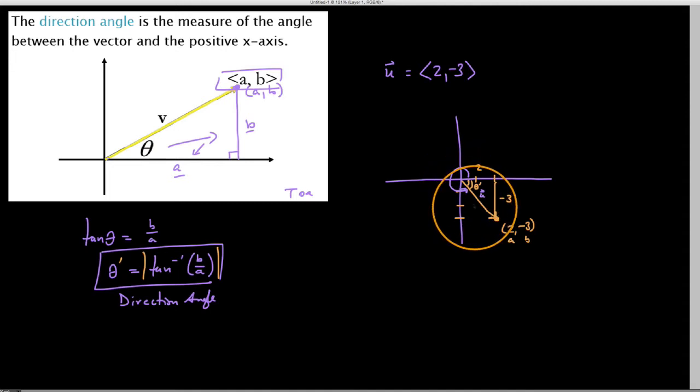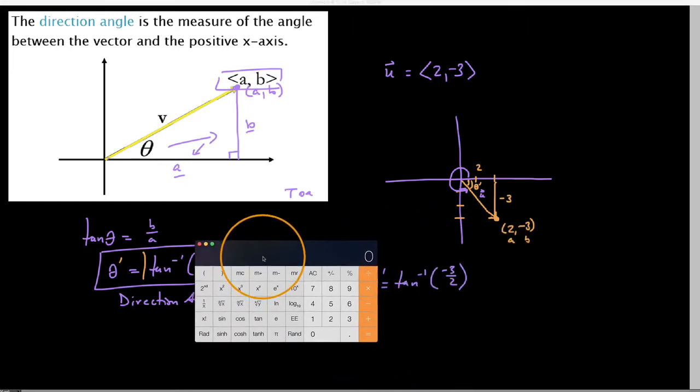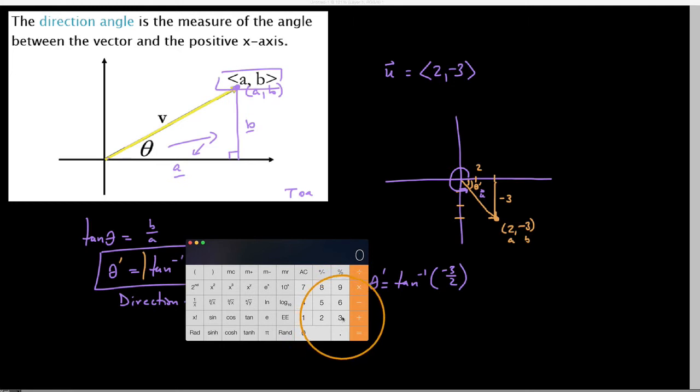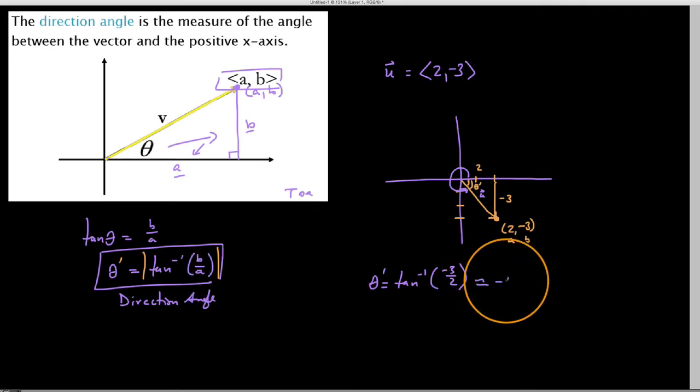So we have theta prime, using this formula that we've outlined here, is equal to the tangent inverse of negative 3 over positive 2. So I'm going to get my calculator out here, and we're just going to evaluate this. So we have 3 that is negative, divided by a positive 2 is negative 1.5, and we are going to find the tangent inverse of this. So tan inverse, and we get about a negative 56.3 degree angle here.